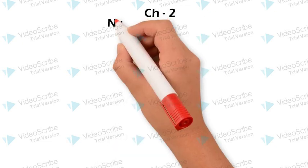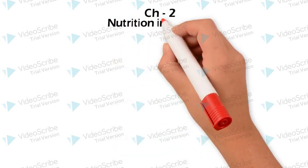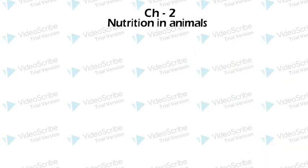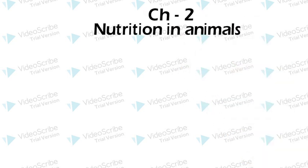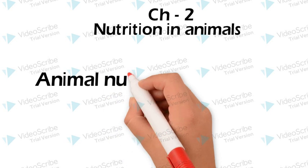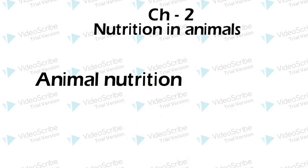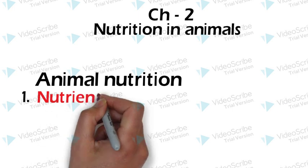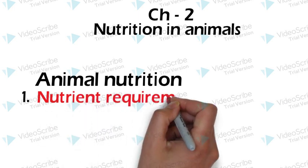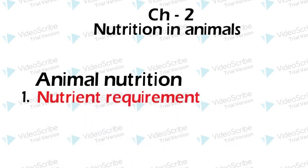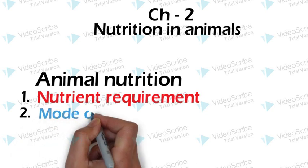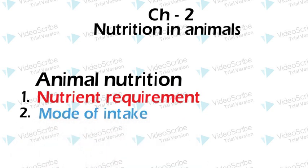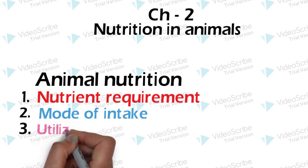Chapter 2: Nutrition in Animals. In this topic, we will discuss about animal nutrition mainly based on three points. First, nutrient requirement. Second, the mode of intake. Third, the utilization of the body.